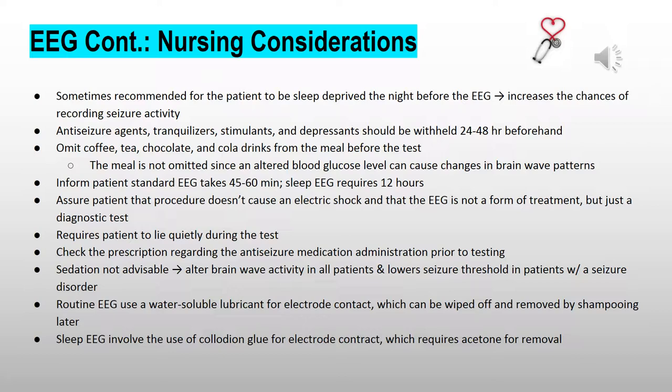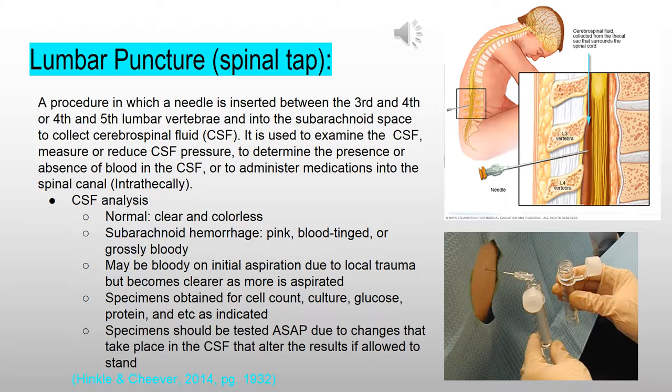A lumbar puncture or spinal tap is a procedure in which a needle is inserted between the third and fourth or fourth and fifth lumbar vertebrae and into the subarachnoid space to collect cerebral spinal fluid, or CSF. It is used to determine the presence or absence of blood or to administer medication intrathecally. In the analysis of CSF, normal is clear and colorless. Presence of blood indicates subarachnoid hemorrhage; however, initial presence of blood is normal due to local trauma from the needle. Specimens are obtained for cell count, glucose, and protein and should be tested as soon as possible due to changes that occur in the CSF if allowed to stand.